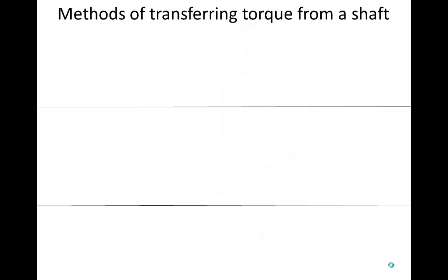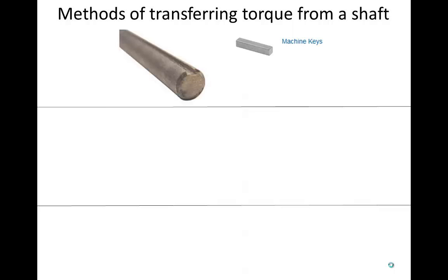Topic number one: direct drive components. We won't spend much time on this since you have already watched a video and completed an assignment on different methods for transferring torque and power from a shaft. The most common method is using a machine key, where a groove is machined into a shaft and a square key is placed in the groove. The component that will attach to the shaft also has a key slot, and the machine key forces the component to turn with the shaft.